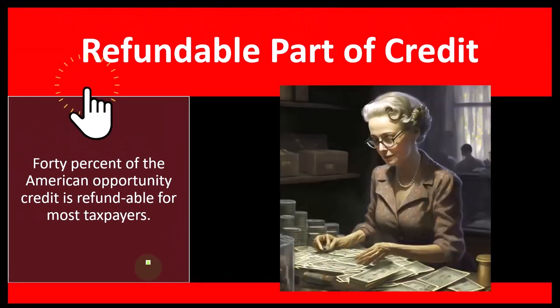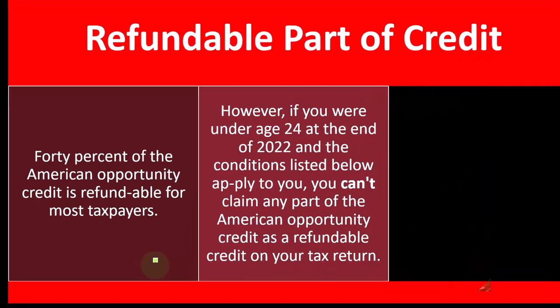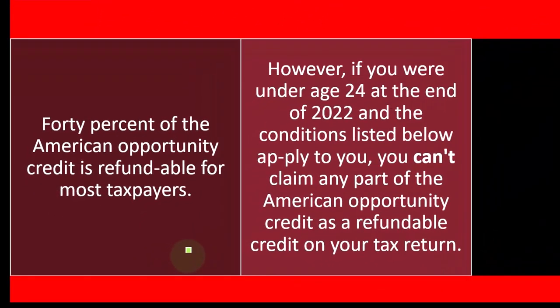Refundable part of credit: 40% of the American Opportunity Credit is refundable for most taxpayers, meaning the refundable portion is the amount that could take the tax liability below zero. If you don't owe any tax, you still get a refund — a benefit. That's when the tax credit is used more as a welfare or benefit program, as opposed to a pure tax reduction.